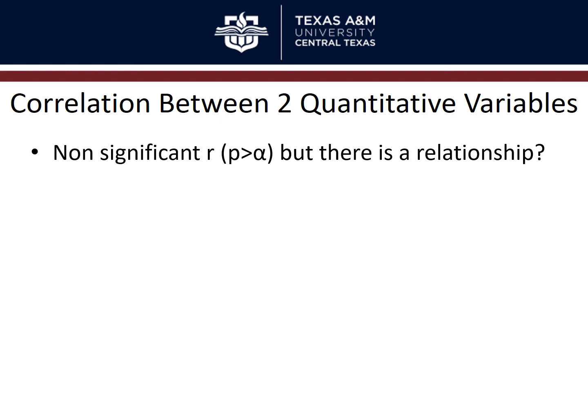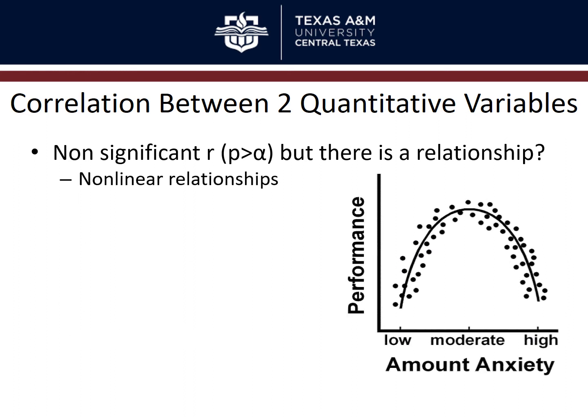What does it mean if we have a non-significant correlation — where p is greater than alpha? One of the biggest reasons you might not find statistical significance is a non-linear relationship, because Pearson correlation coefficients and Spearman's rho look at linear relationships — where as you increase on one variable, you have continuing increases or continuing decreases on the other, with no change in direction.